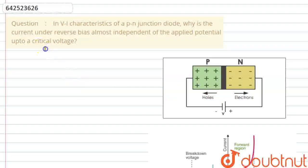Hello everyone, let's start the question. The question says that in VI characteristics of a PN junction diode, why is the current under reverse bias almost independent of the applied potential up to a critical voltage?